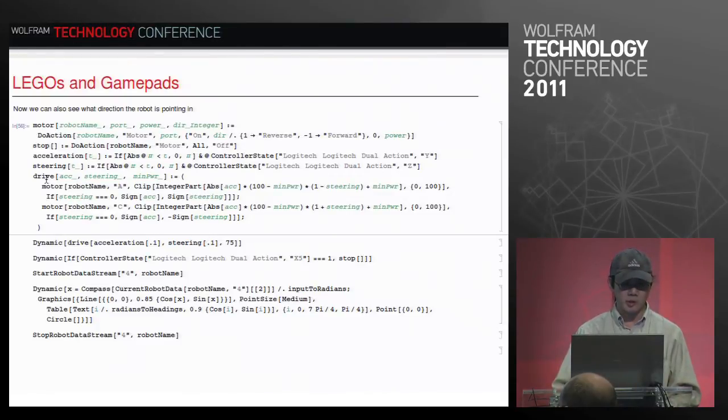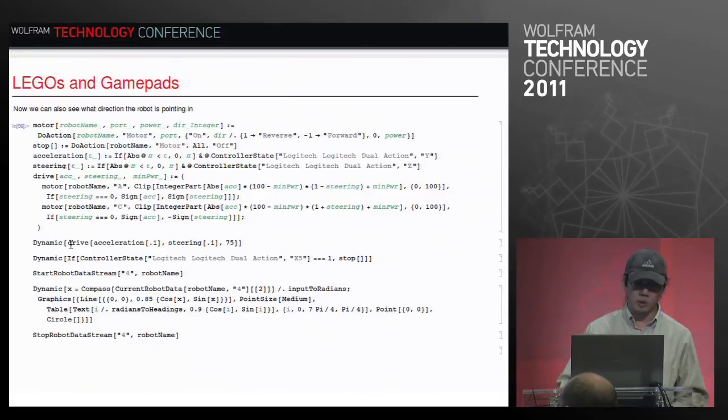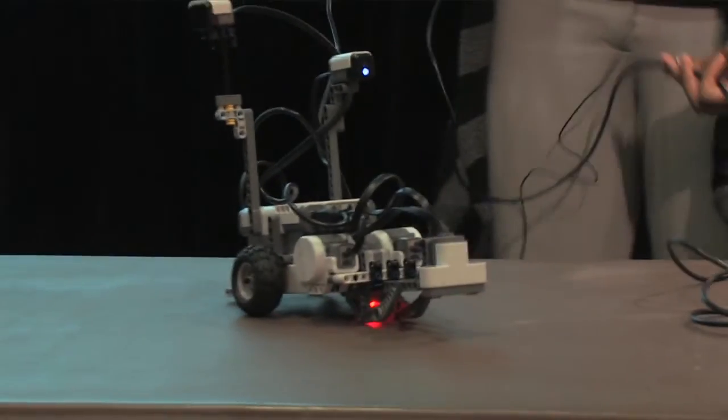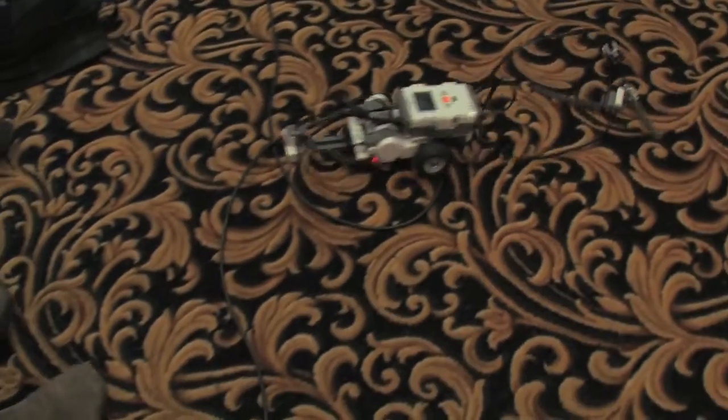So again, we hook up the dynamic. The core of this is this drive function. Basically, you give it the acceleration and the steering. And then you got a little calibration you got to do with the minimum power because these game pads aren't so linear. There's a big jump in data. And then you hook it up to the good old faithful dynamic again. And then you get your event handler. And here we go. Power.